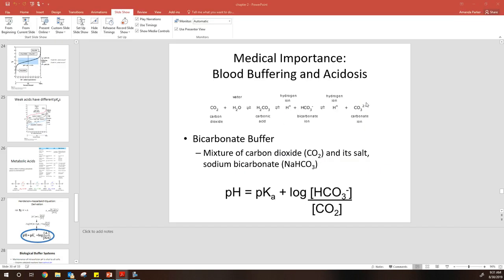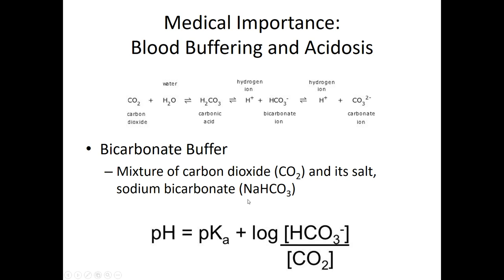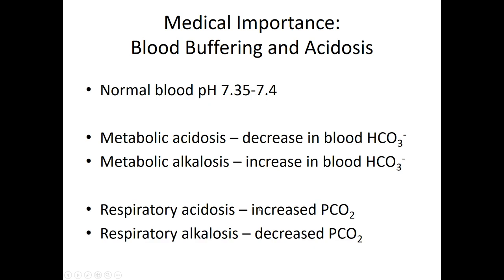Issues can certainly occur. If we end up with too low or too high a pH, we can have acidosis or alkalosis. A decrease in blood bicarbonate is a metabolic acidosis. An incredibly high pressure of carbon dioxide is a respiratory acidosis. A very high blood bicarbonate level is a metabolic alkalosis, and a very low carbon dioxide pressure is a respiratory alkalosis.